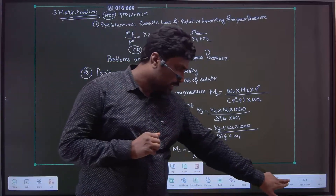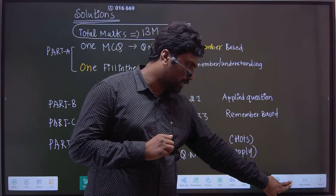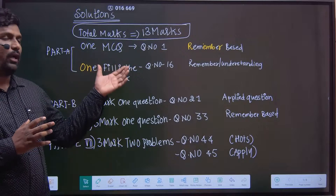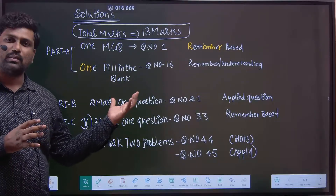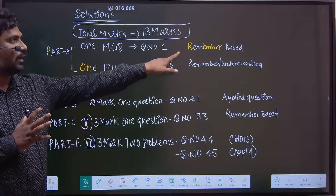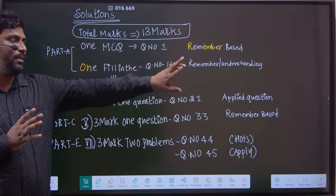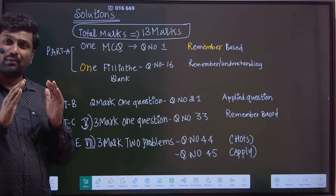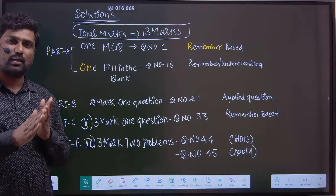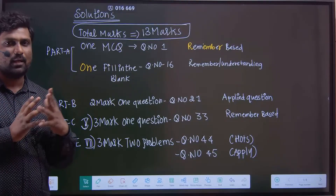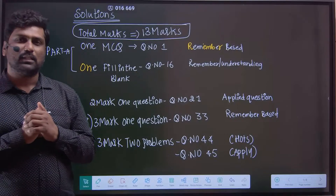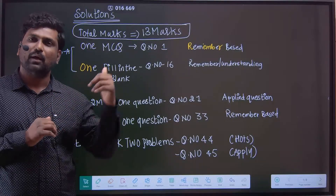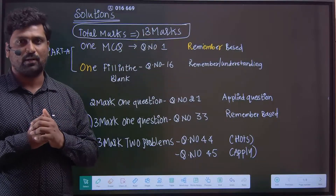So this is about the Solution chapter weightage and important topics — how to focus and prepare. We follow the blueprint: remember-based, understanding-based, applied-based, and higher order thinking level questions. By understanding the blueprint, you will know the chapter-wise marks distribution in the annual chemistry examination. In the next class, we will cover the Electrochemistry chapter weightage and important questions. Thank you.